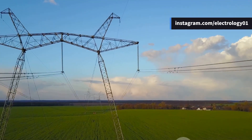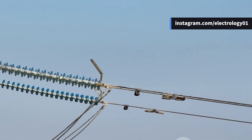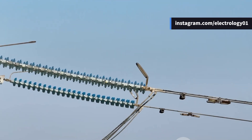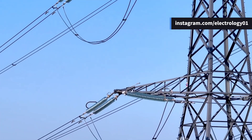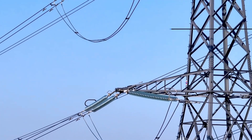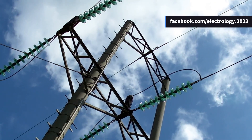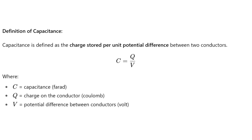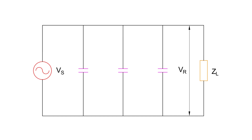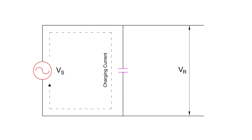Finally, let us move on to capacitance. Any two conductors separated by insulation behave like a capacitor. In overhead lines, the air between conductors acts as this insulation, so capacitance naturally exists between any two conductors of the line. Capacitance is defined as the charge per unit potential difference — simply, charge divided by voltage. This capacitance is spread uniformly across the line and can be imagined as a chain of capacitors connected between conductors.